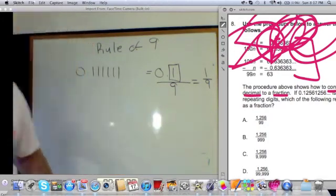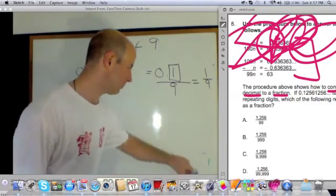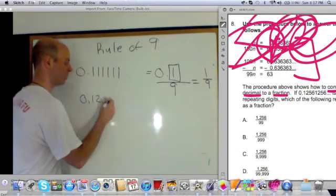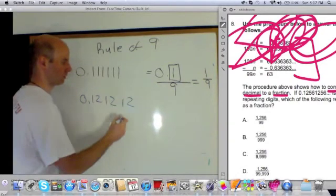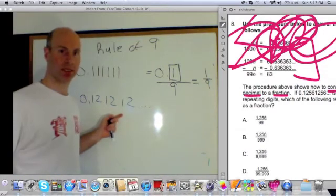You did that so fast, Chris. I didn't quite get it. Well, let's do it again. Let's take another repeating decimal. How about 0.121212 repeating. Identify the portion that's repeating. That's just the 12.